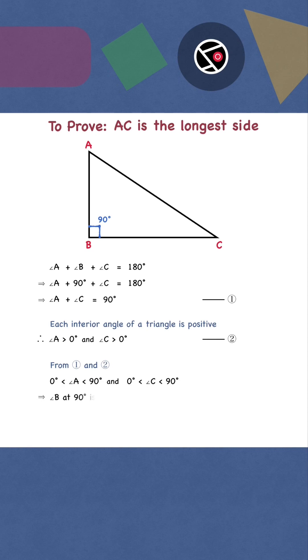Clearly, angle B at 90 degrees is the largest angle. In a triangle, the side opposite to the largest angle is the longest. Therefore, AC, the hypotenuse, is the longest side. We are done.